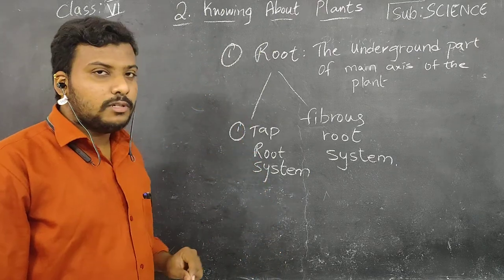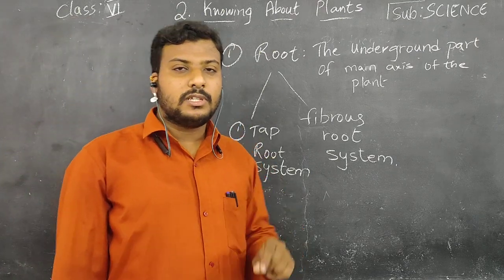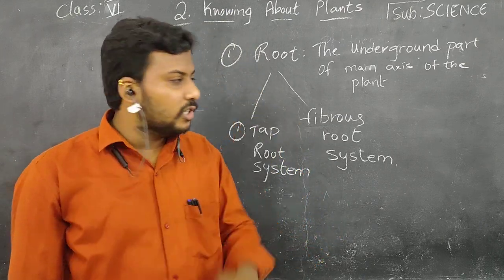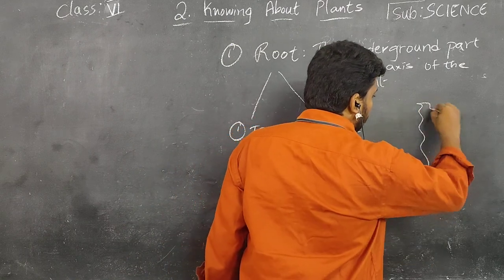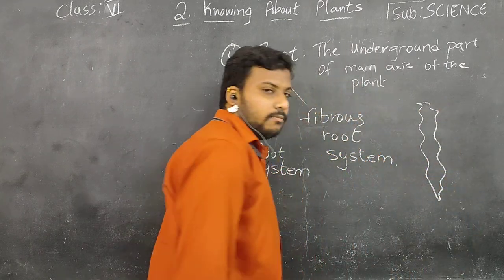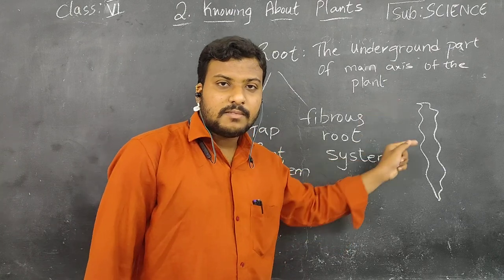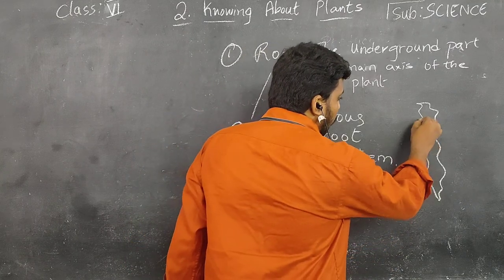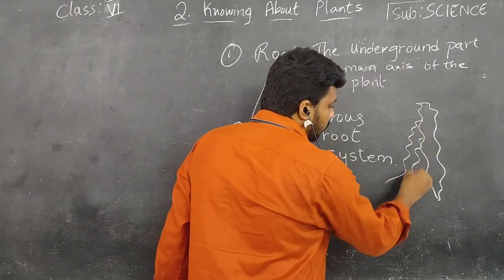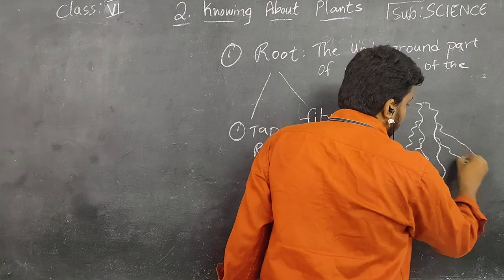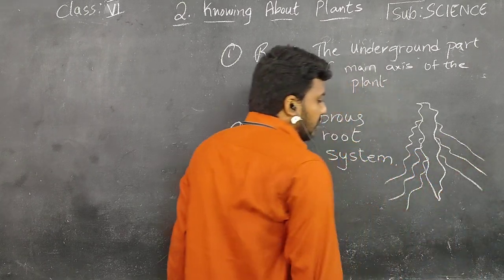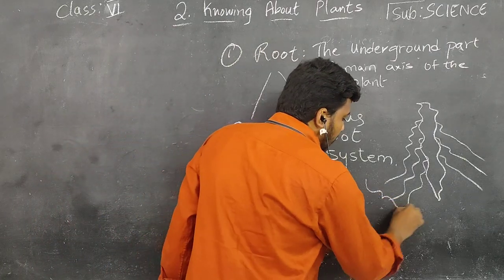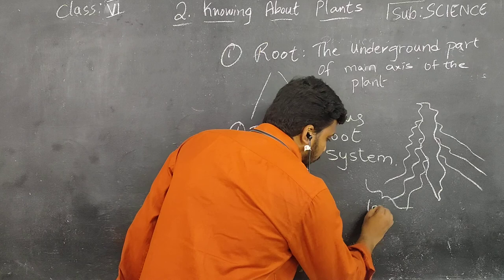So what is the tap root system? The tap root system is a root which arises as a single root — it arises like one single root. And some other roots arise from this tap root; these arising roots are called lateral roots.